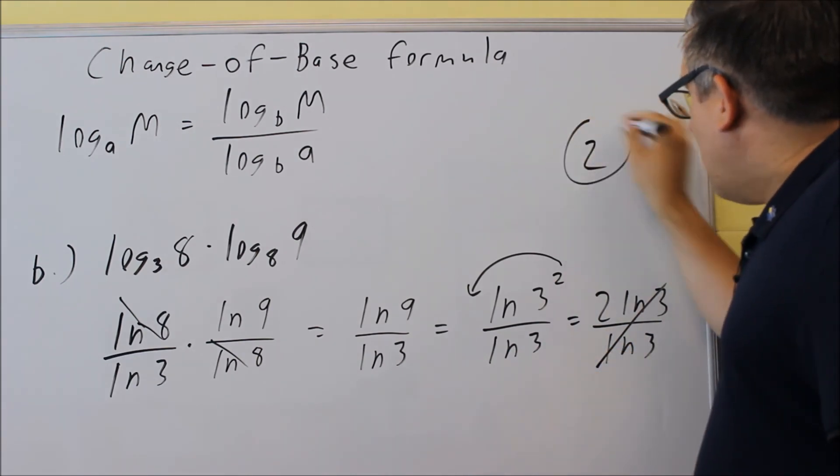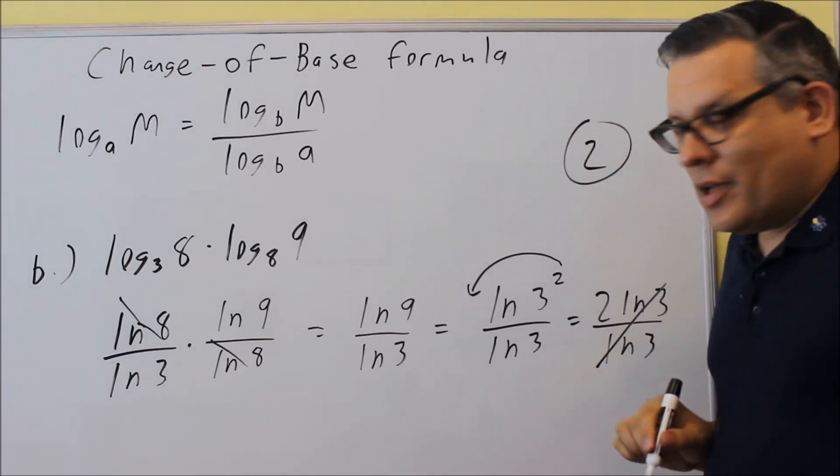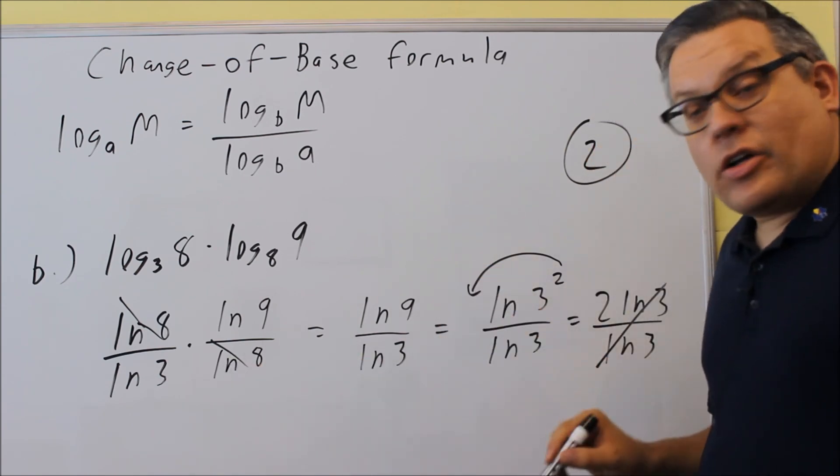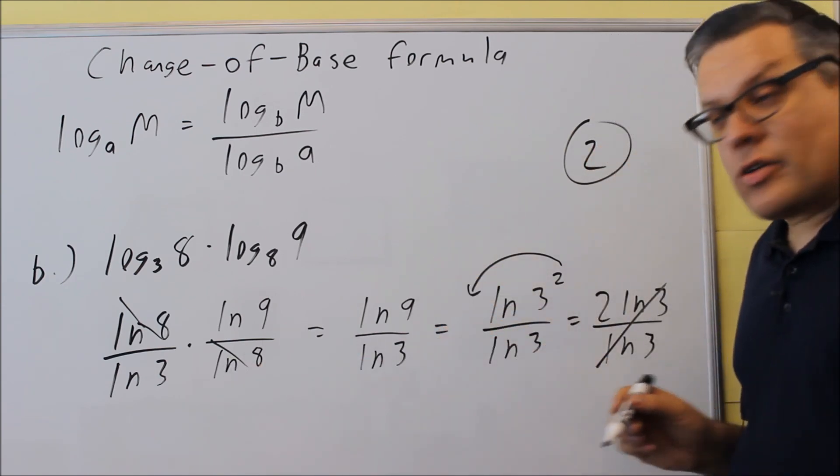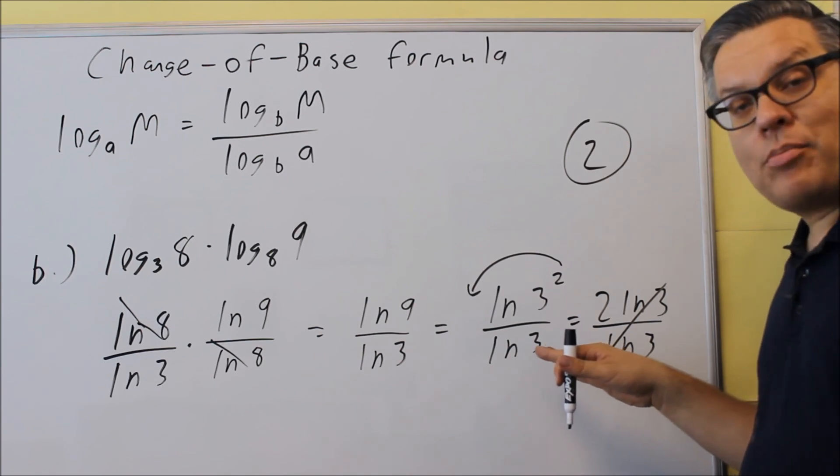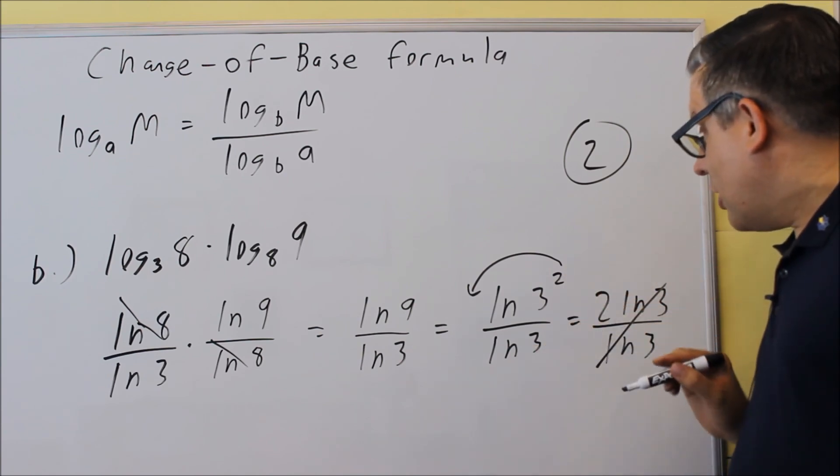So the answer for this problem would be 2. Now I would get the same thing if I just put that in my calculator, LN 9 divided by LN 3. But there are some times where you could apply properties just like this. But we end up getting the same answer.